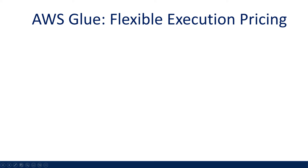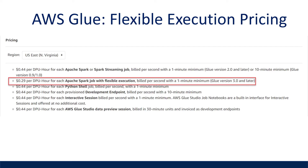So what are the cost savings from enabling this feature? Traditional Glue jobs have a fixed DPU hour rate of $0.44 per hour at the time of making this video. Flex jobs are billed per worker at the Flex DPU hour rate of $0.29 per hour. This brings us a total cost savings of 34%.